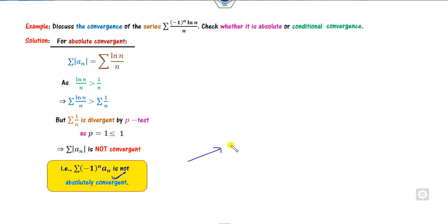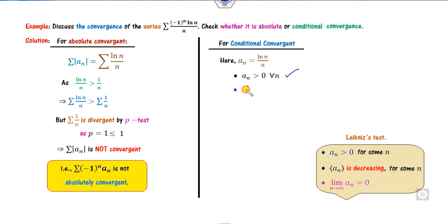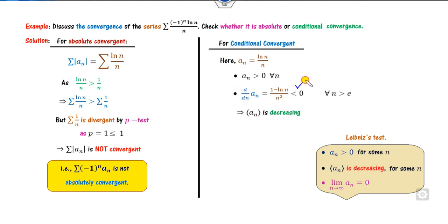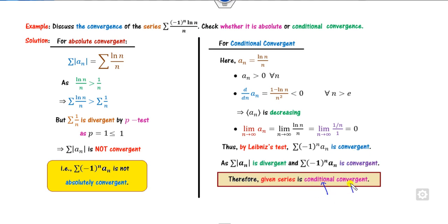Once it is not absolutely convergent, it will be either conditionally convergent or divergent. We apply the Leibniz test. Here aₙ = ln(n)/n. The first property: ln(n)/n > 0 is satisfied. Taking the derivative gives (1 - ln(n))/n², which is less than 0 for all n > e (since ln(e) = 1), so it is decreasing. The limit as n→∞ is 0. All properties are satisfied, so by the Leibniz test this is convergent. But the absolute value is not convergent. Therefore, this series is conditionally convergent.